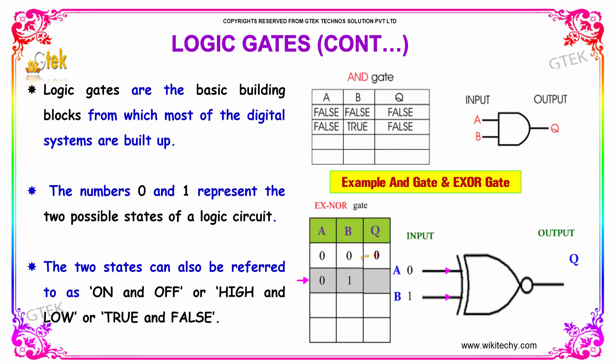The numbers 0 and 1 represent the two possible states of a logic circuit. The two states can also be referred to as on and off, high and low, or true and false.